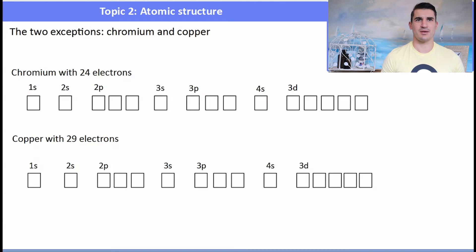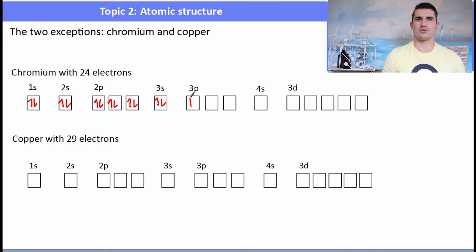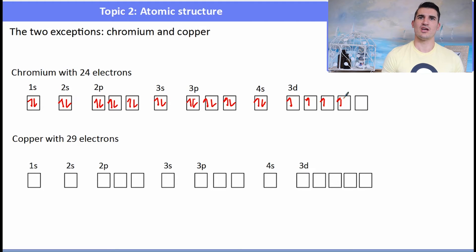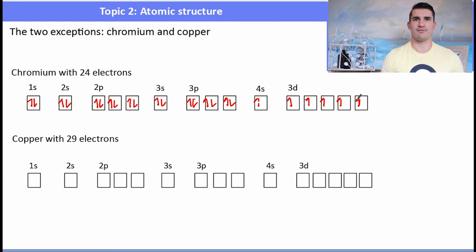Electron spin indicates the direction the electron is spinning; all spins are the same until electrons begin to pair. For chromium's orbital diagram: the argon core has full subshells and orbitals. The 4s would normally have two electrons and 3d would have four, but chromium promotes one 4s electron into the 3d, leaving the 3d half-filled with five orbitals each containing one electron, and the 4s also half-filled — a stable arrangement.